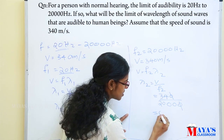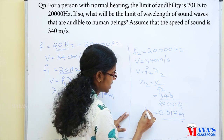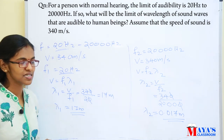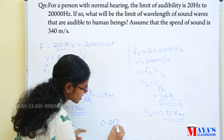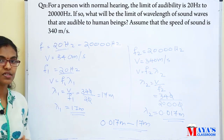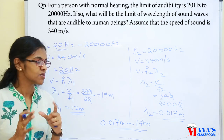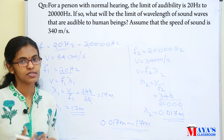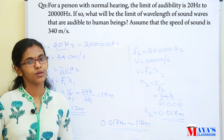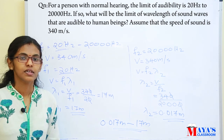The calculation gives lambda 1 as 17 meters and lambda 2 as 0.017 meters. So the range of wavelength is 0.017 meters to 17 meters. That is the audible wavelength range for human beings.